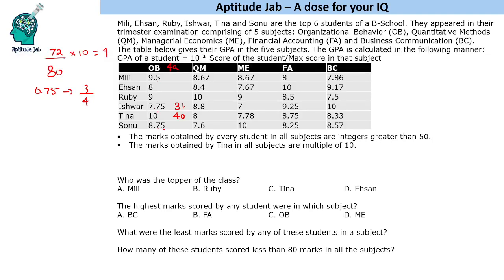Since the marks must be greater than 50, we take the next multiple of 4, which is 80. With a maximum of 80, one GPA point equals 8, so we multiply all GPA values by 8: 9.5 × 8 = 76, 8 × 8 = 64, 9 × 8 = 72, and 8.75 × 8 = 70. So for OB the maximum marks are 80.